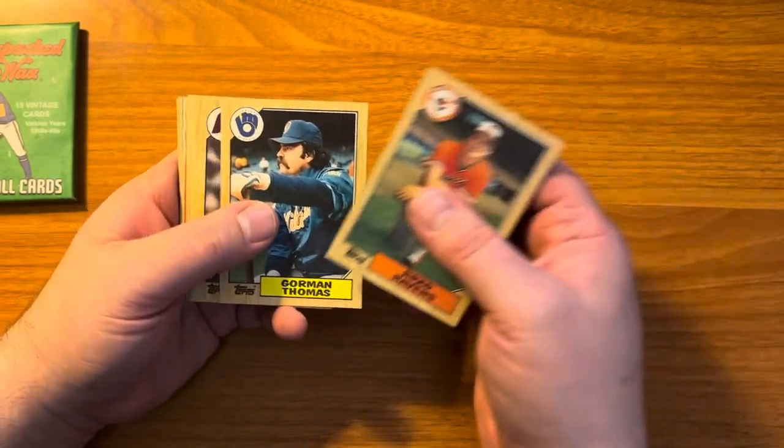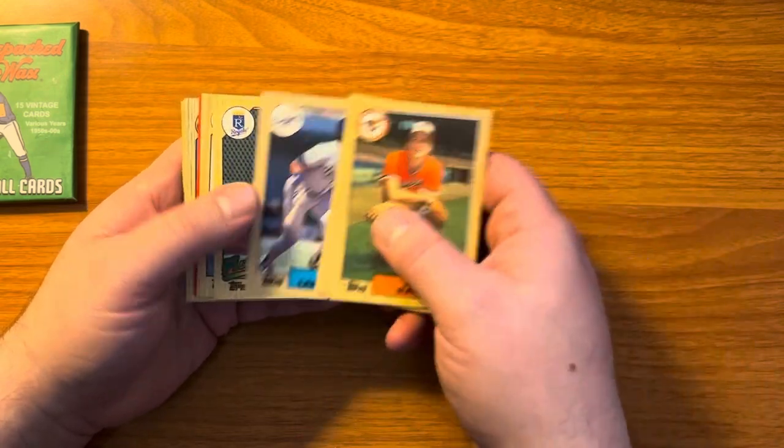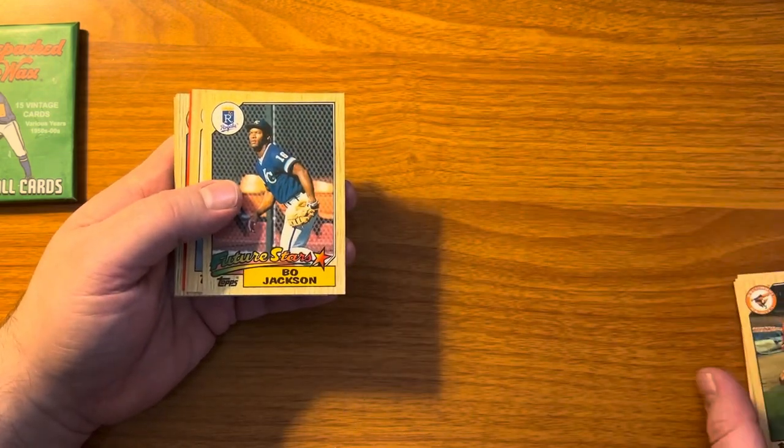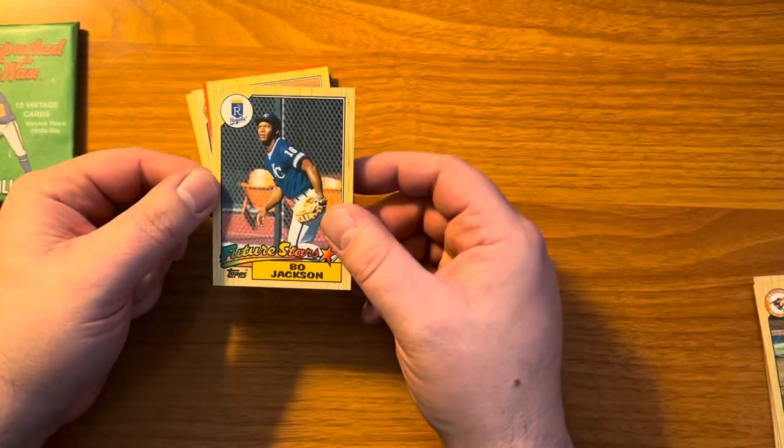All right, so we got Brad Havens. This is a Gorman Thomas. Of course, we're looking for some rookies in here. Hall of Famers. Look at that. Bo Jackson. There we go.